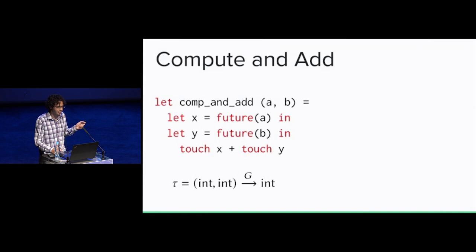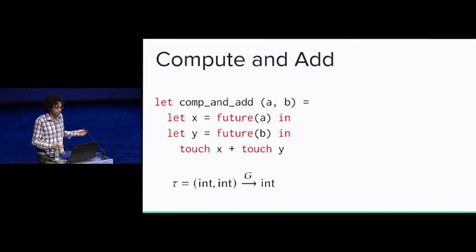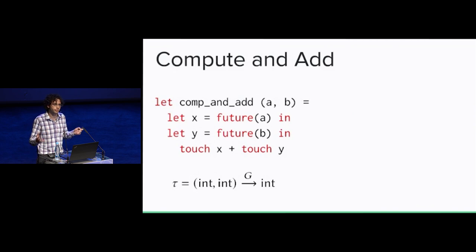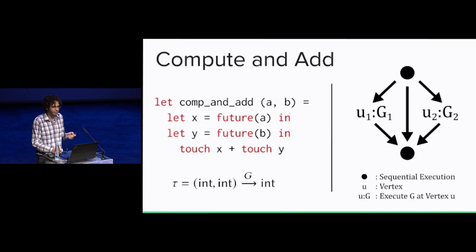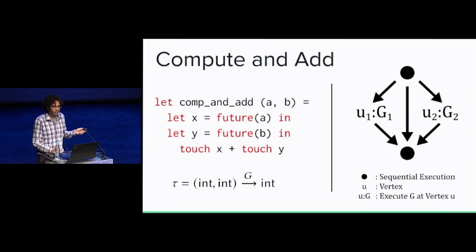Here's an example: comp-and-add, which takes two inputs, creates a future for both, then touches them and adds them together. For those who don't know, a future is basically an expression that spawns a new thread and computes whatever is inside of it — and then later you can touch it to get the result. Looking at the type, it takes two ints and returns an int. This G is the graph type, saying that this function makes graph type G when it executes. Visually, the graph starts at the top node, spawns left and right to new futures, and the main thread of execution goes down to the bottom node, which touches both futures.